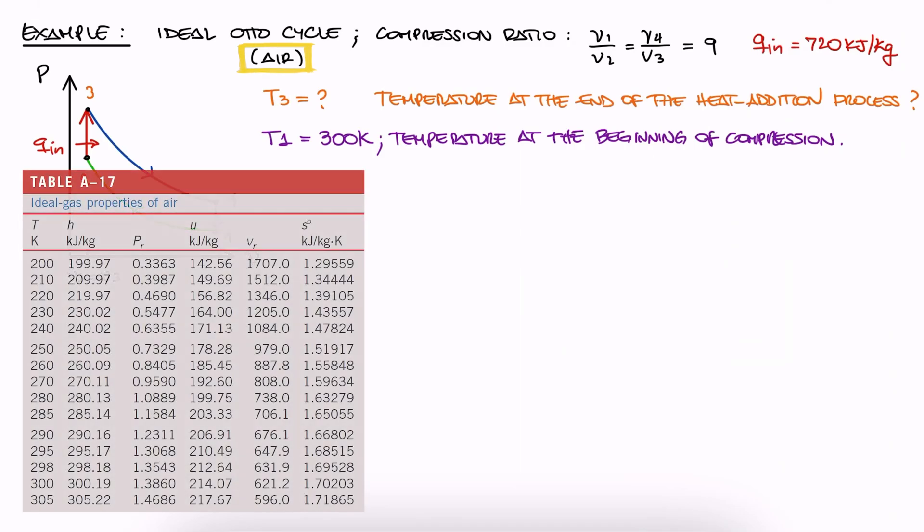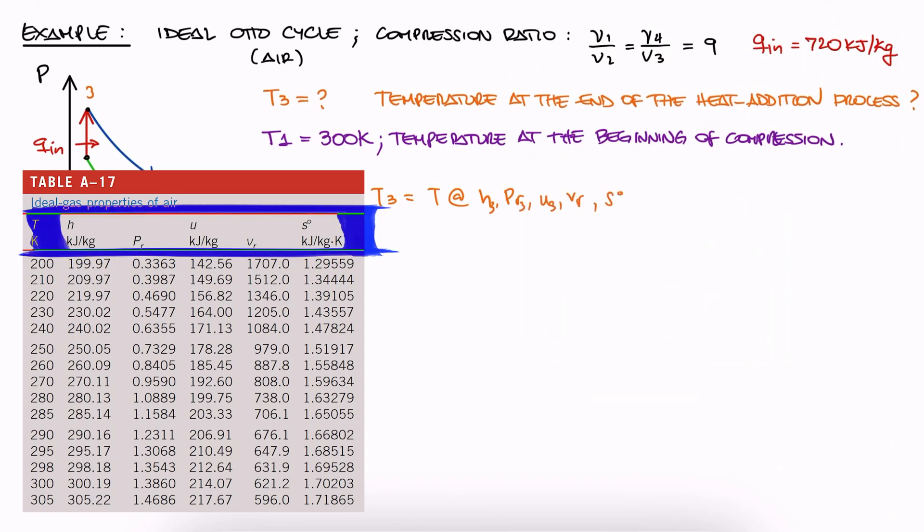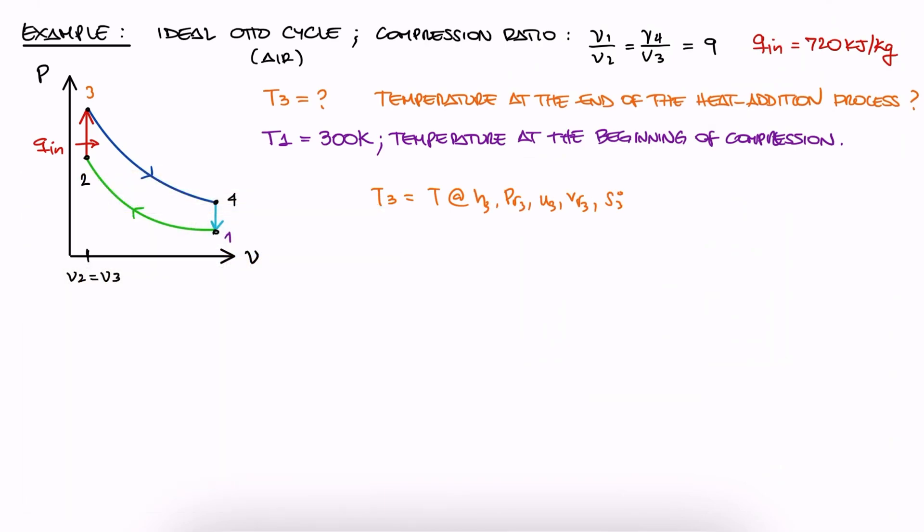Since we have air and we have tables for air properties, we know that we can find the temperature at any stage if we have any of the properties on that table. And if we look at our quick PV diagram, we see that we're looking for T3. In this case, the property we can find for 3 is the specific internal energy because we have the heat going in between 2 and 3.